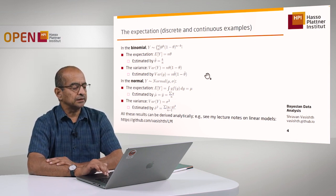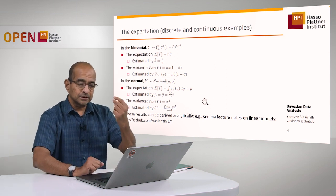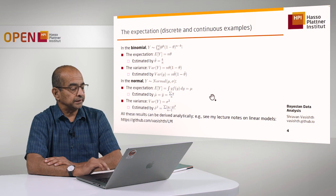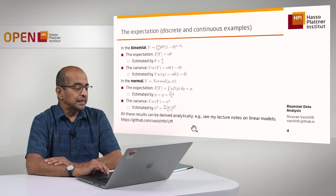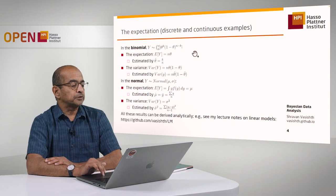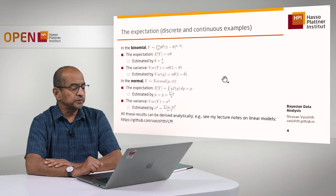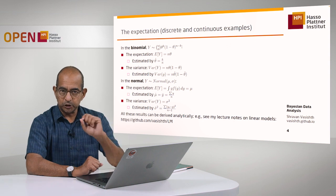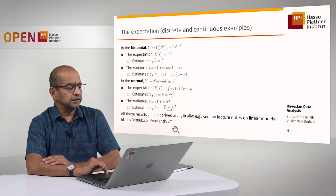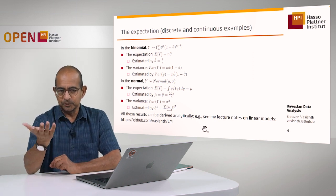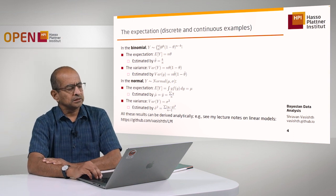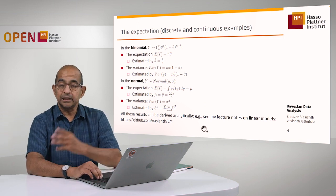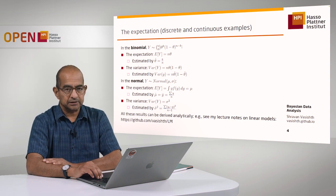These are what you must have seen in standard introductory statistics courses. All these results — that the expectation is this and the variance is that for the normal and the binomial — can be easily derived analytically, just on paper. I've done that in my other lecture notes which are online if you're interested in the proofs. They require a little bit of calculus in the continuous case, but they're not very complicated, and you'll also find them in every mathematical statistics textbook.